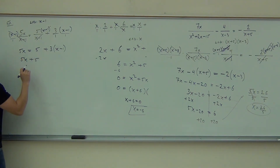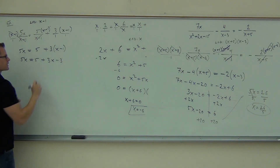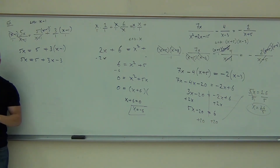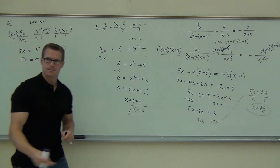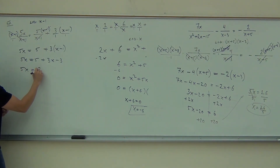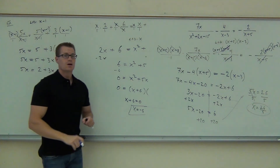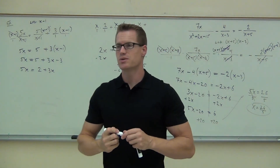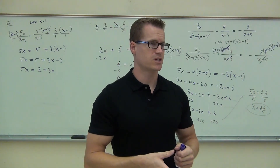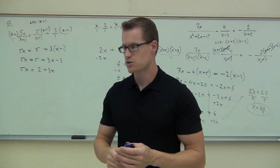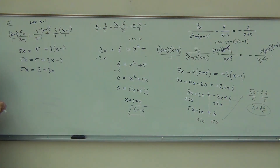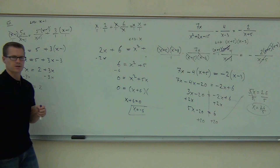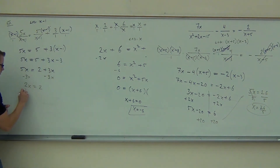I'm not going to distribute the plus three times x minus one just yet — in case that was a minus sign I want to see it. So: 5x plus 5 equals 5 plus 3x minus 3, which gives us 5x plus 5 equals 2 plus 3x after combining like terms. Next step: do we set equal to zero, or solve as-is? No x squared, so choice B — solve as-is. Subtract 3x: 2x equals 2, so x equals 1.